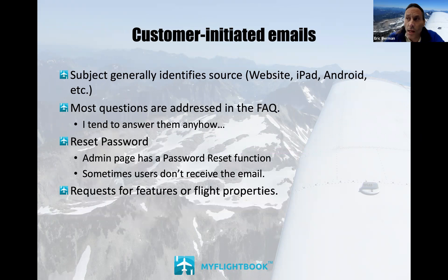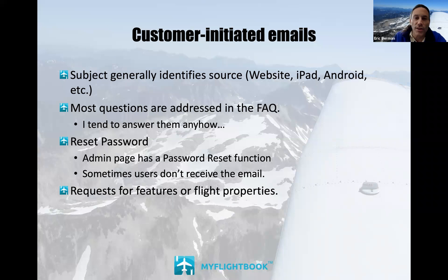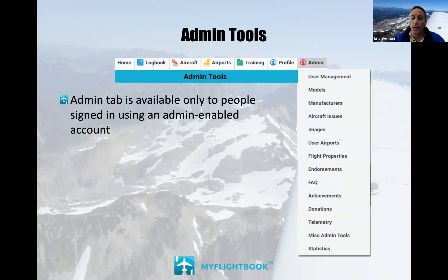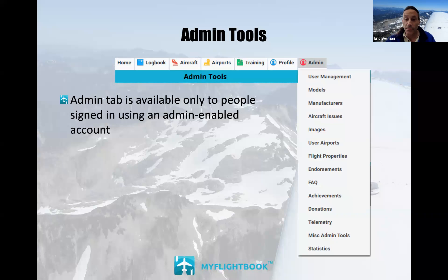I also get emails from the contact us page on the website. When it comes from one of the mobile apps it includes the word iPad, Android, or iPhone, so I know which platform they're on. Next to the profile tab I have an admin tab, and you see some subset of this based on the role your account has. If your account has none of the roles, you don't see the tab at all — for example, if you have the accountant role, the admin tab has exactly one item: donations.